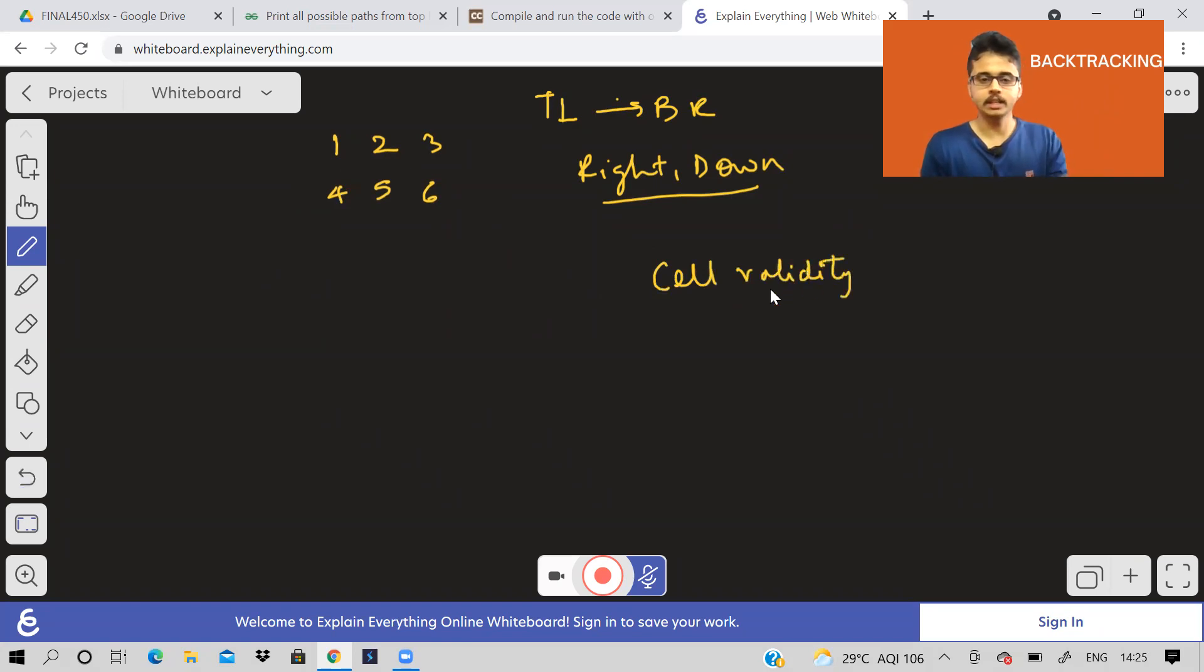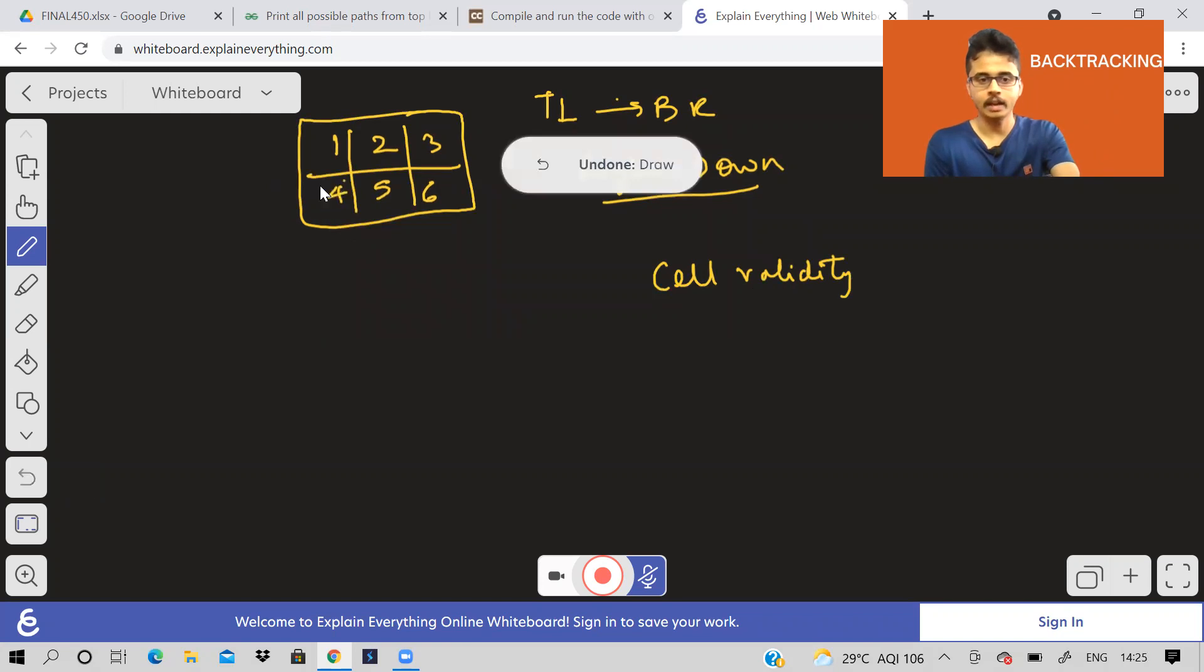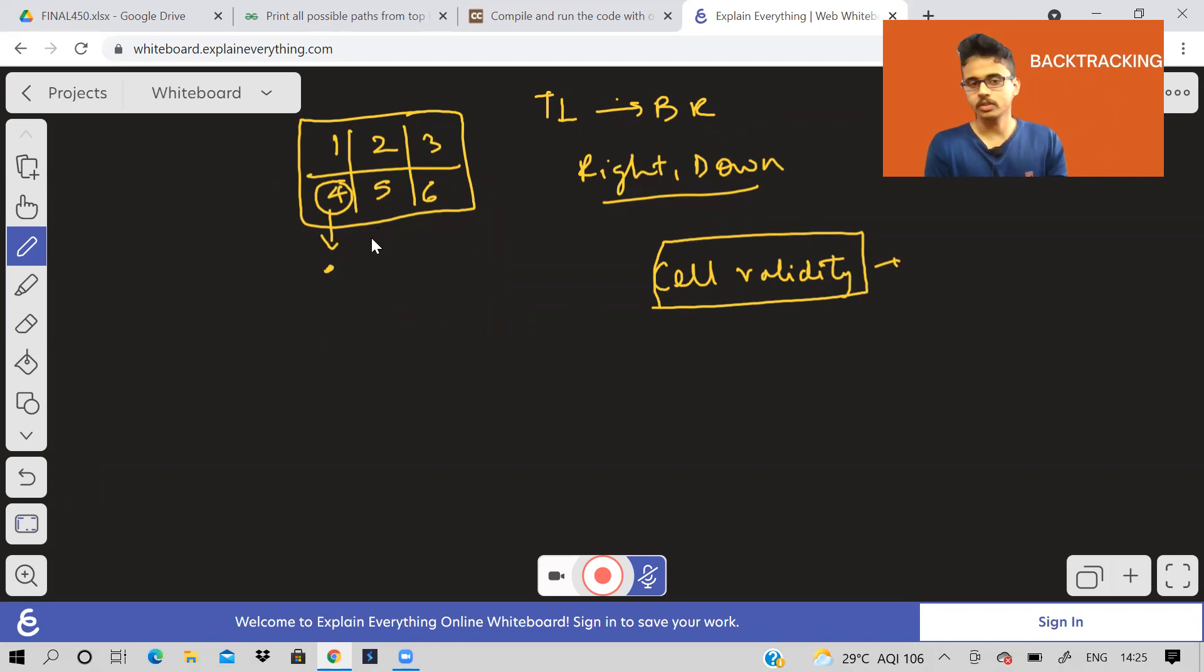And again, when we reach a new cell, we will have two options. So again, in this problem, like the previous problems, we have to check for cell validity. What does it mean? Cell validity is: is the current point at which I am inside the matrix or not? So this is, for example, a 2 cross 3 matrix. And I can't be here, right?